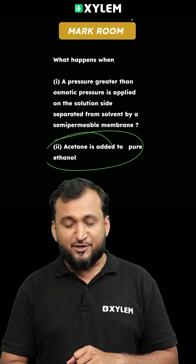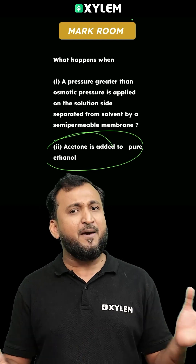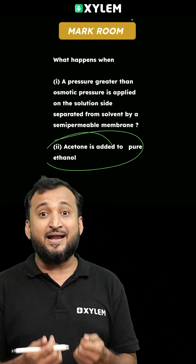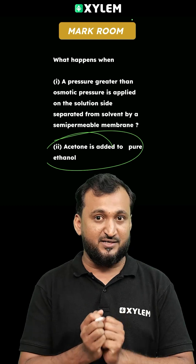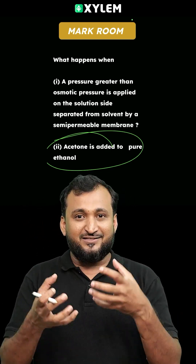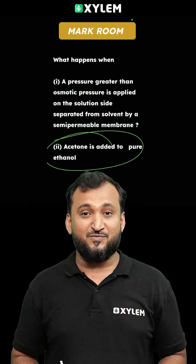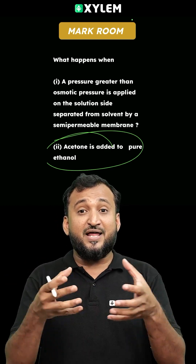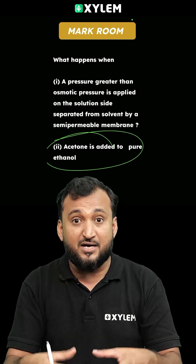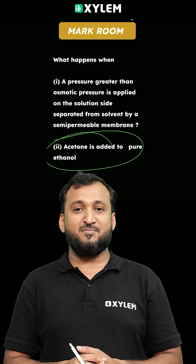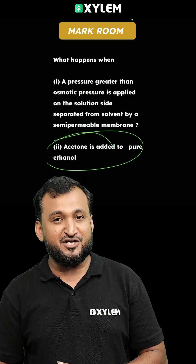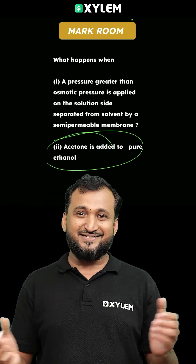When acetone is added to pure ethanol, ethanol molecules normally have strong intermolecular hydrogen bonding. But when acetone is added, the intermolecular hydrogen bonding becomes weak. The intermolecular attraction in the mixture of acetone and ethanol is very weak, which means it shows a positive deviation from Raoult's law.